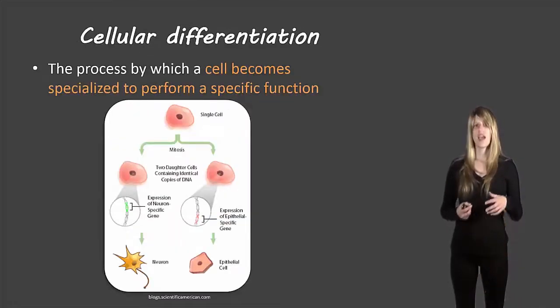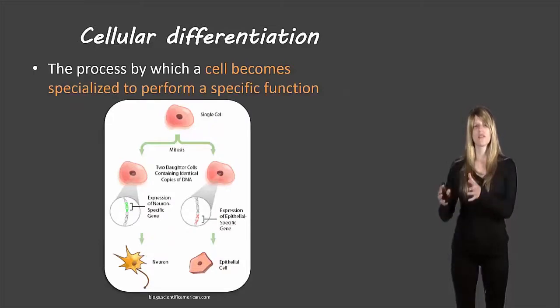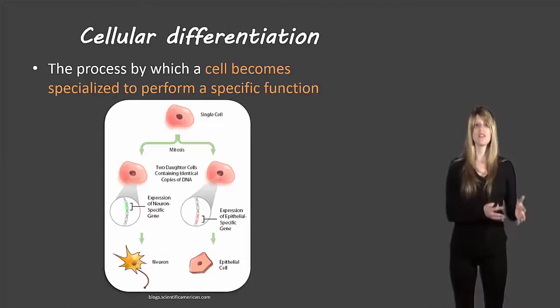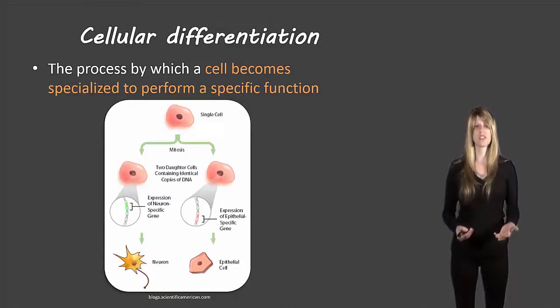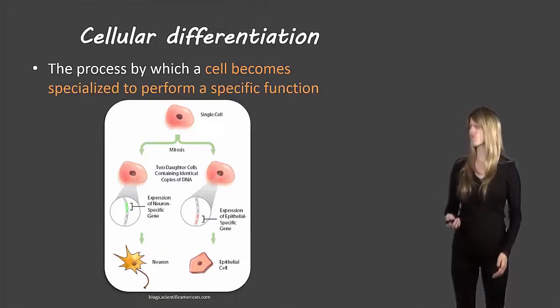The actual process of a cell going from a stem cell to a differentiated cell is called cellular differentiation, or sometimes it's called cellular specialization.